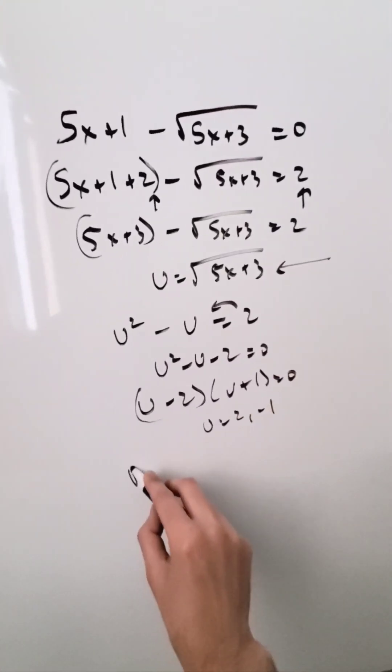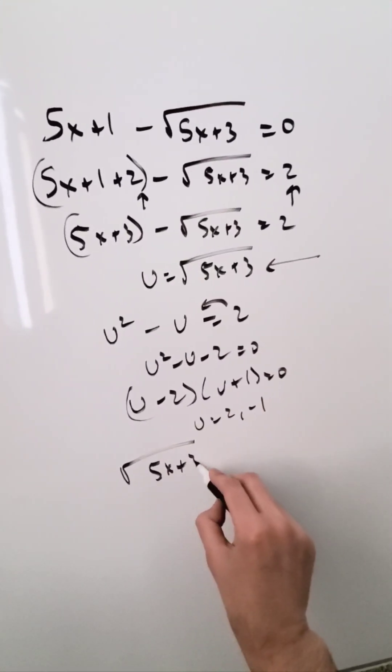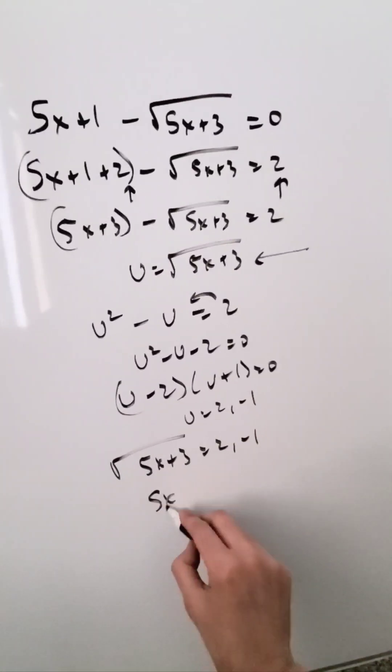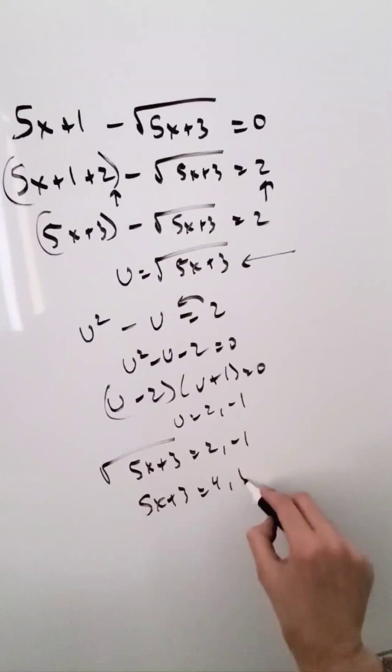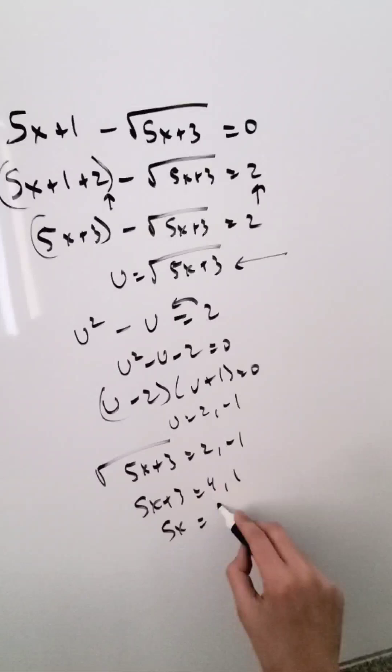Equal it to your substitution. Root 5x plus 3 is equal to 2 comma minus 1. Get rid of the square root: 5x plus 3 is equal to 4 comma 1. Solve for x: 5x is equal to 1 comma minus 2.